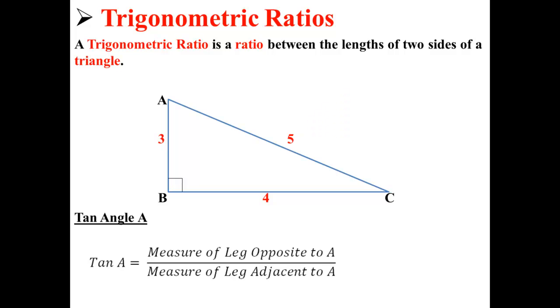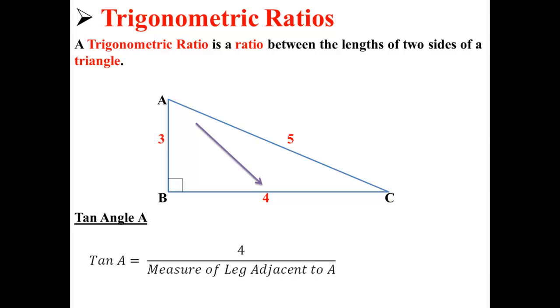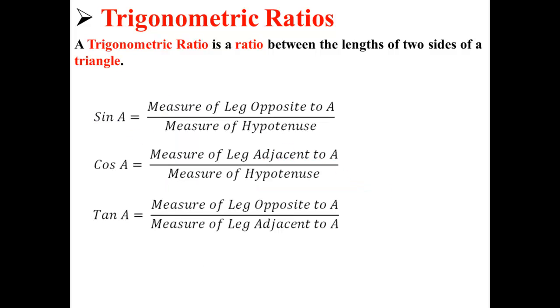And last, we'll find the tangent of A. First, we find the measure of the leg opposite to A. In this case, it's 4, as indicated by the purple arrow. Next, we find the measure of the leg adjacent to A. In this case, it's 3. So the tangent of A is equal to 4 over 3, or 1.25. These are the three trig ratios.